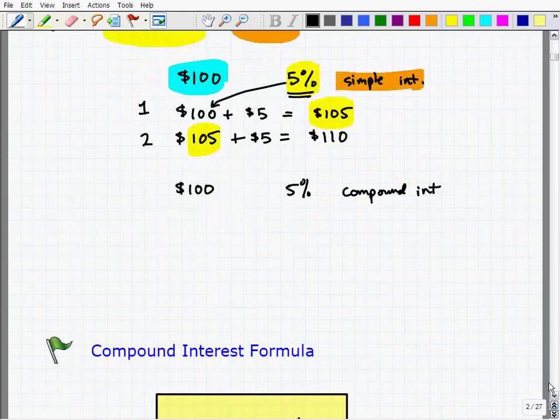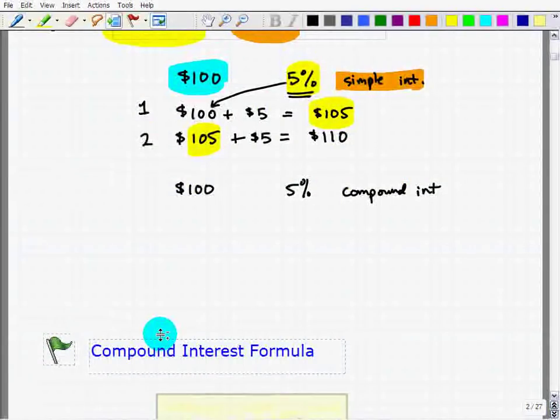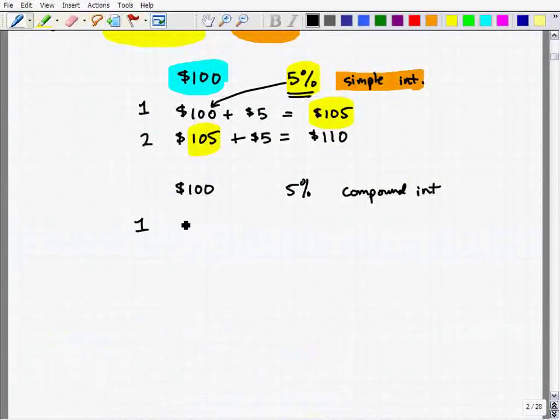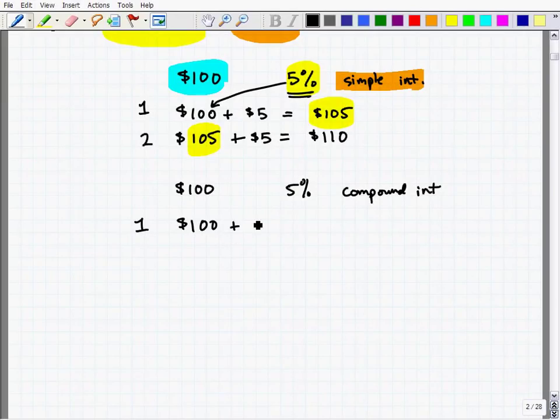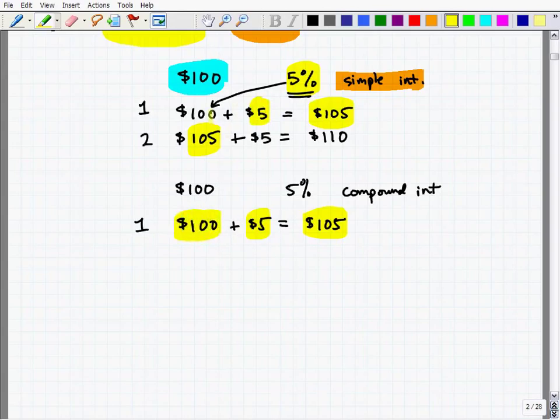So the first year, you would get $5. You would get 5%, which is $5 on your money. So there's no difference in the first year. You get $105. So you're saying, what's the big difference here? I don't see the real value. You both earn 5% on your initial amount. Your initial amount is your principal.